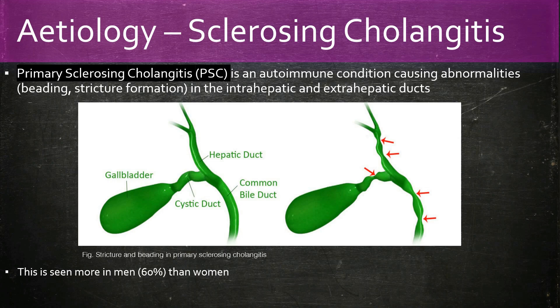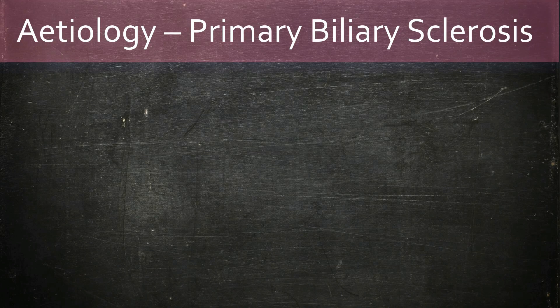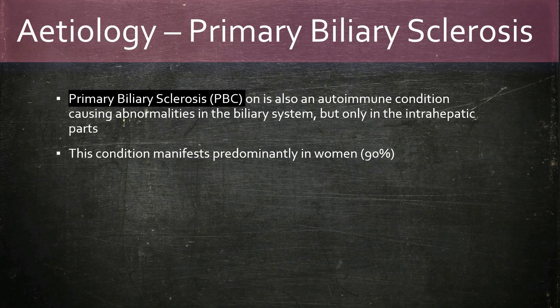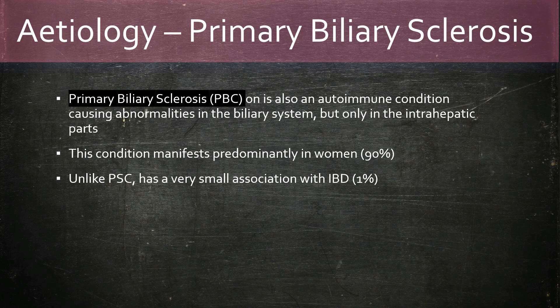Primary biliary cholangitis is an autoimmune condition like PSC. However, it affects only the intra-hepatic parts of the biliary system. It manifests predominantly in women — over 90% — having little association with inflammatory bowel disease, and presents with positive anti-mitochondrial antibodies, AMA.